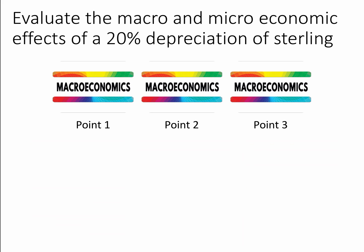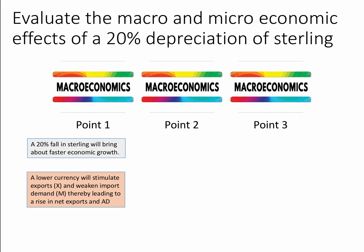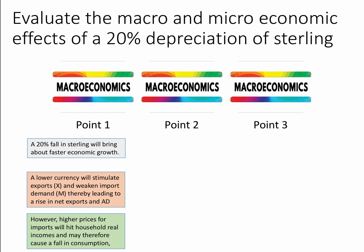Now we can look at some macro effects — the bigger picture on the macroeconomy. A 20% fall in sterling will bring about faster economic growth; it could help sustain an economic recovery or take an economy to a higher level of GDP per head. A lower currency will stimulate exports (X) and potentially weaken import demand (M), leading to a rise in net exports (X minus M) and therefore an increase in aggregate demand. You could use an AD-AS diagram to support your analysis. However, higher prices for imports will hit household real incomes — energy bills may be higher, weekly supermarket shops more expensive — reducing real income, causing a fall in consumption, which is a negative for aggregate demand and growth.